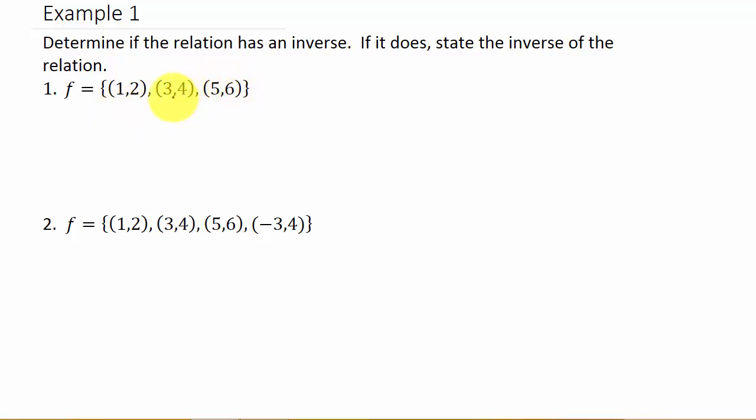So let's look at the first one. Here, we look at all the y values, and you can see we do not have the same y value anywhere. So we're not going to have the same y value with two different x values. So that means for number one, f is one to one, so that means it has an inverse.